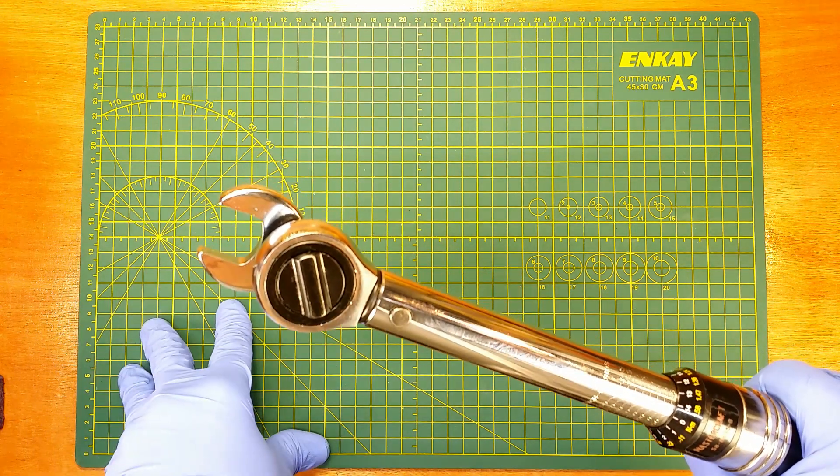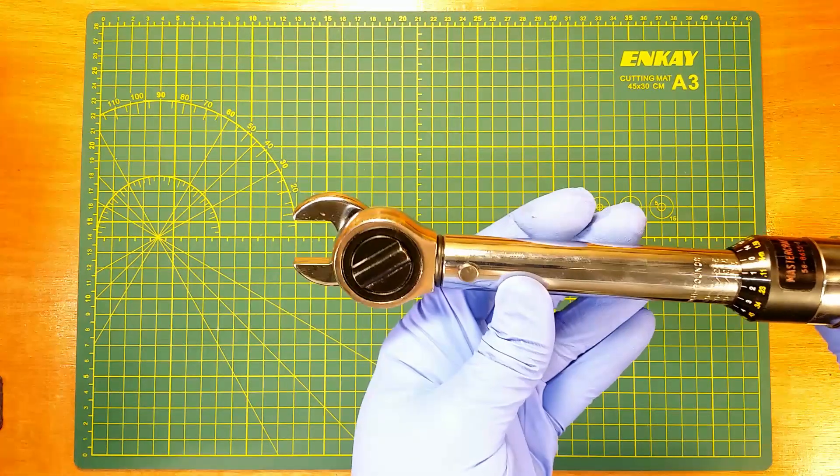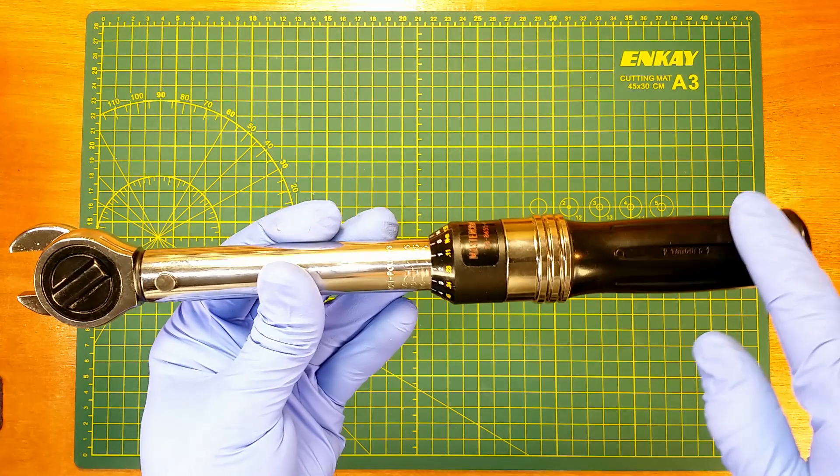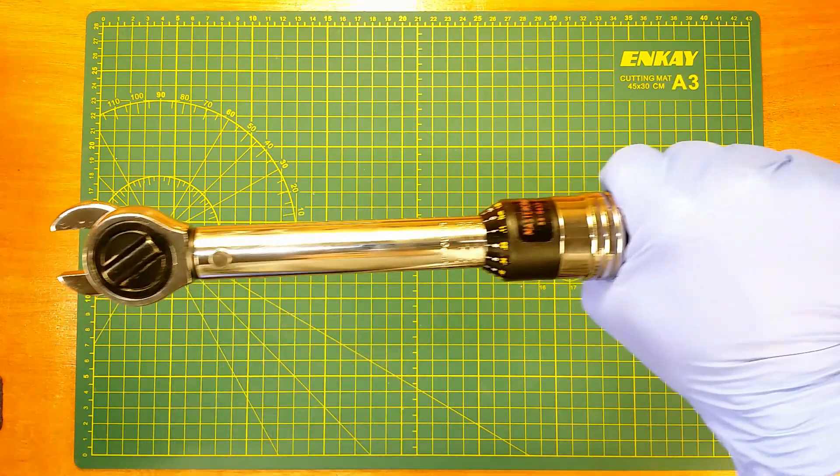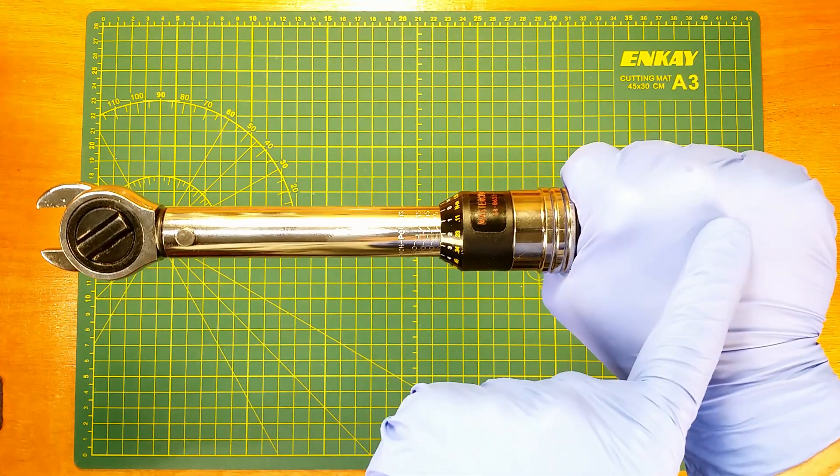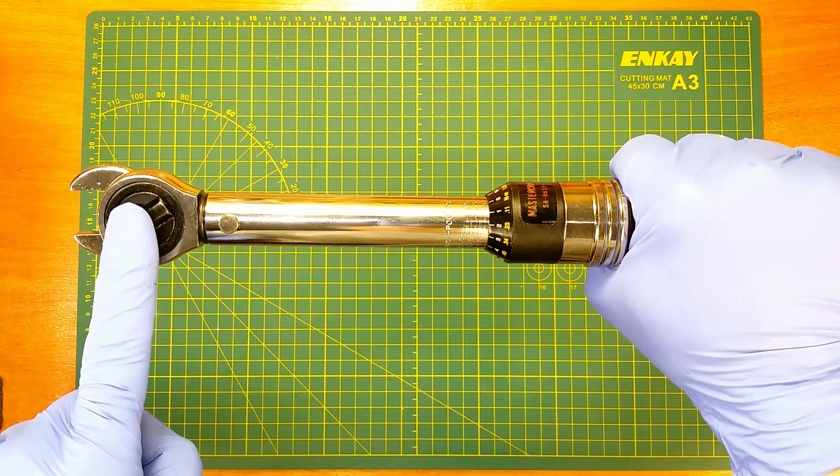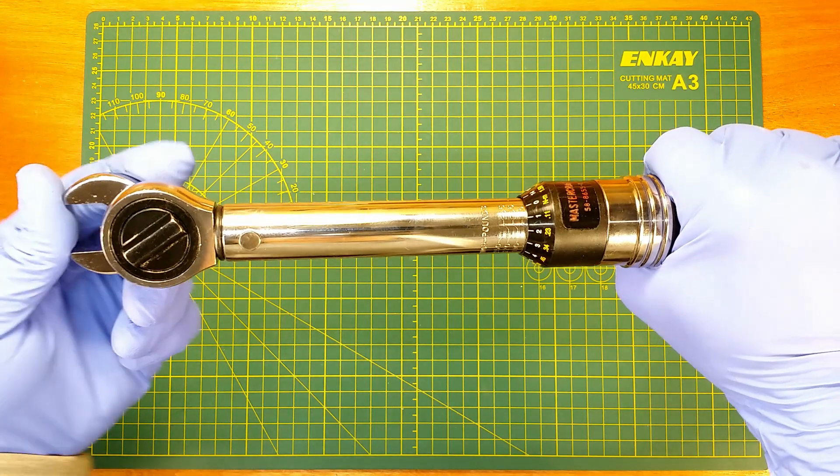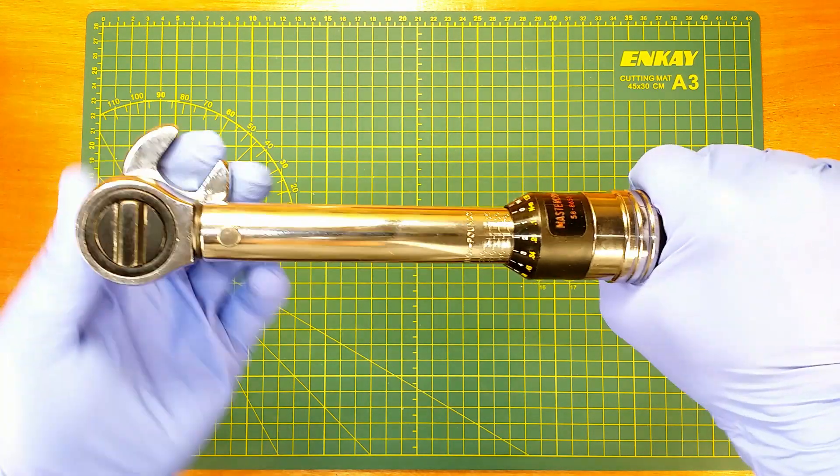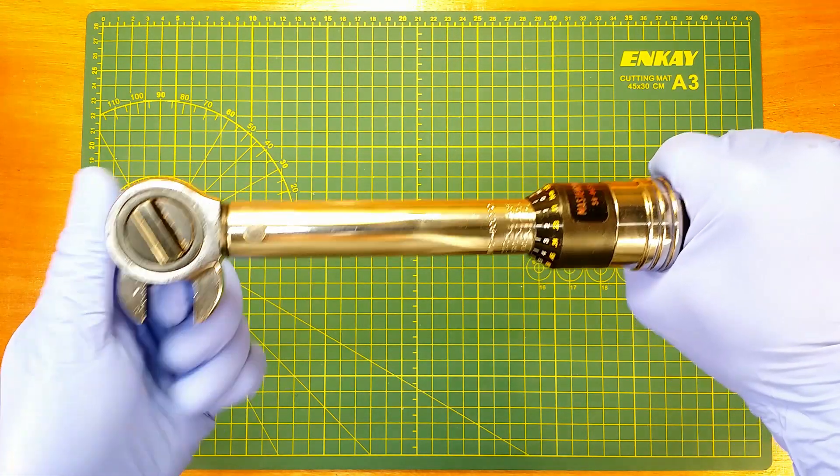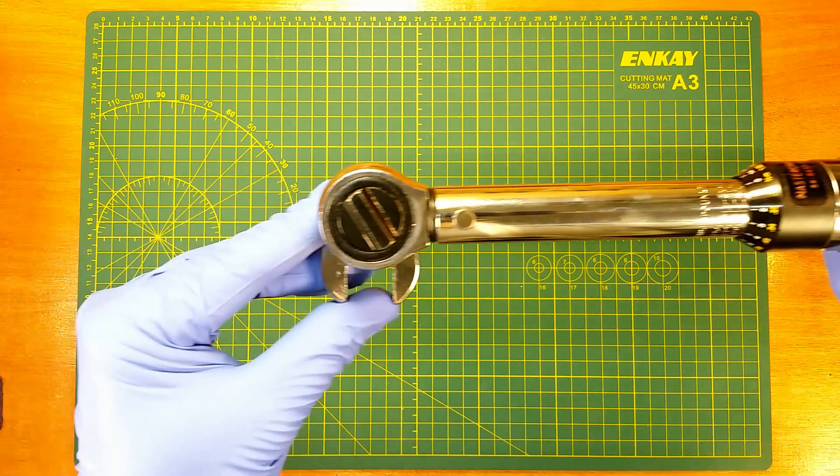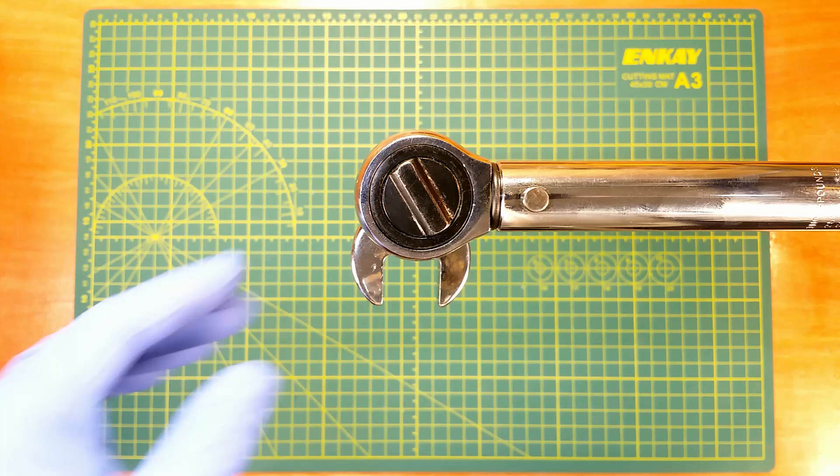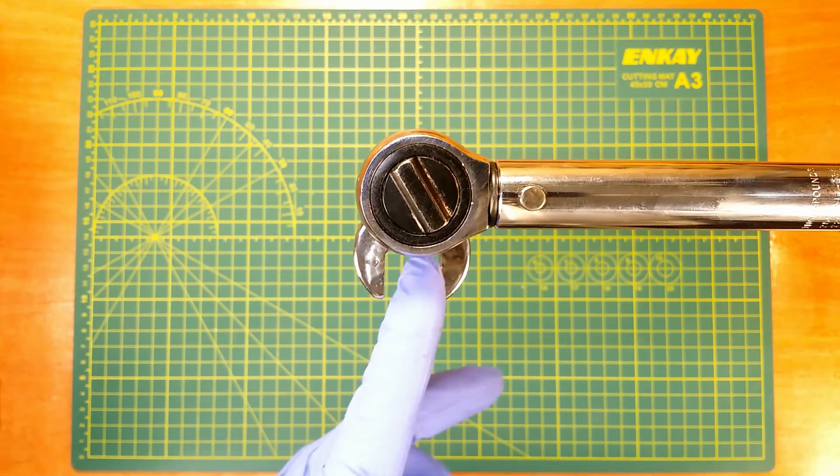The force applied to the bolt or nut will depend on the distance between fulcrum and the point where we applied the force. So when we set our extension at 90 degrees to the wrench we don't have to calculate anything. In this case the torque applied to the bolt or nut is exactly what is set on the wrench. 90 degrees and we don't need calculations.